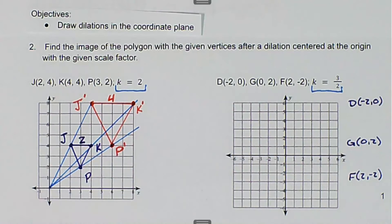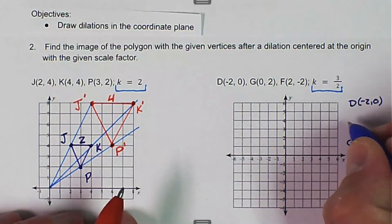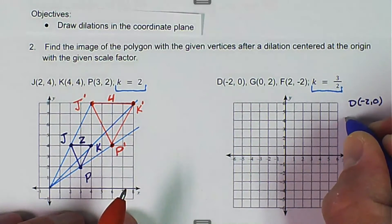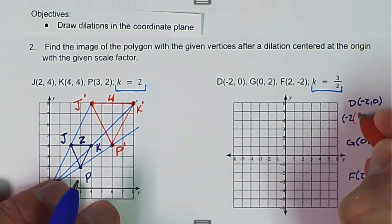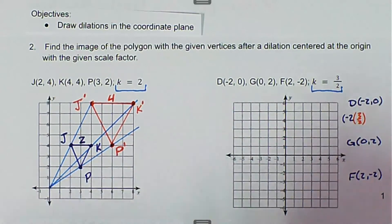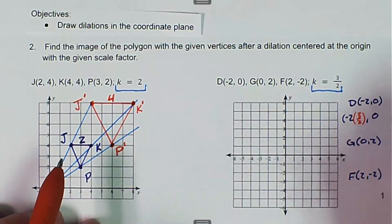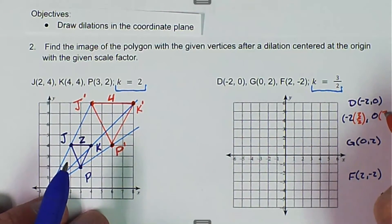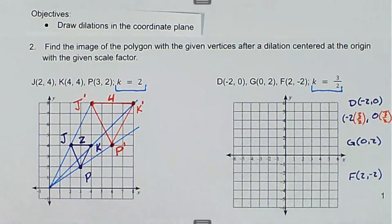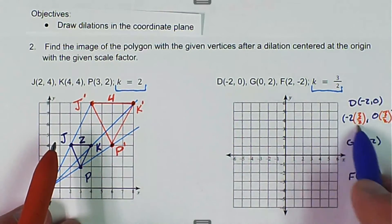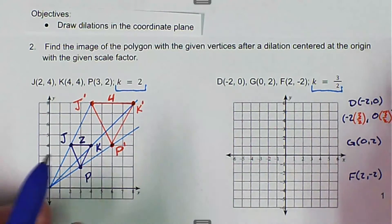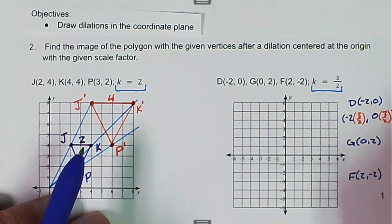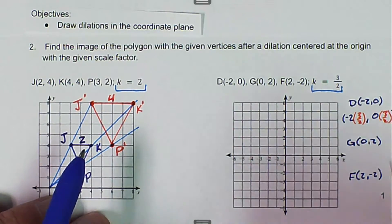So basically we just take all of the pieces and we get negative 2 times 3 halves and 0 times 3 halves. So in this case, the negative 2 and 2 cancel. So we're left with negative 3. And 0 times anything is 0. So D prime is at negative 3, 0.